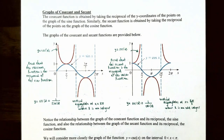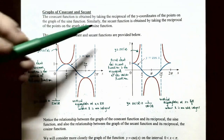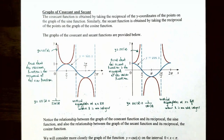So let's talk about the graphs of the secant and the cosecant function. The cosecant function is obtained by taking the reciprocal of the y-coordinates on the points of the graph of the sine function, because the cosecant function is the reciprocal of the sine function. For the same reason, the secant function is obtained by taking the reciprocal of the points on the graph of the cosine function, because secant is the reciprocal of the cosine function. So we have the graphs of the cosecant and secant functions provided below.